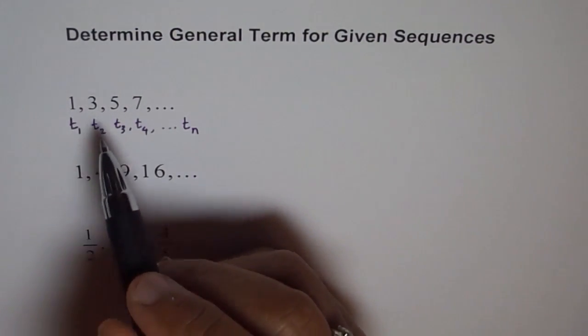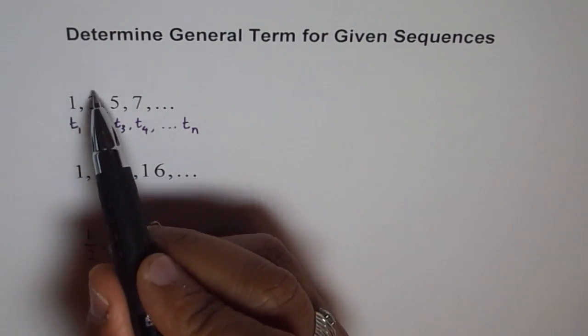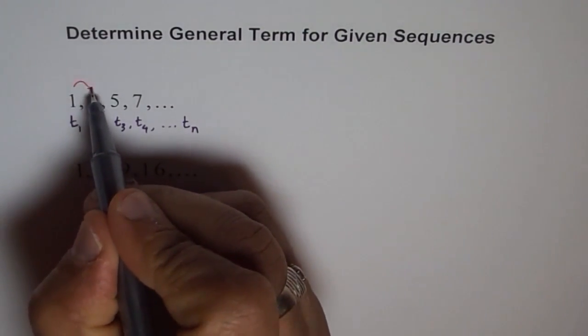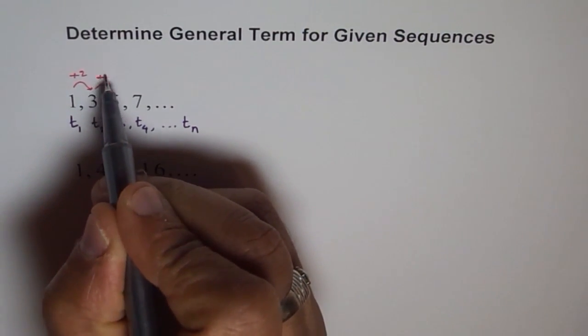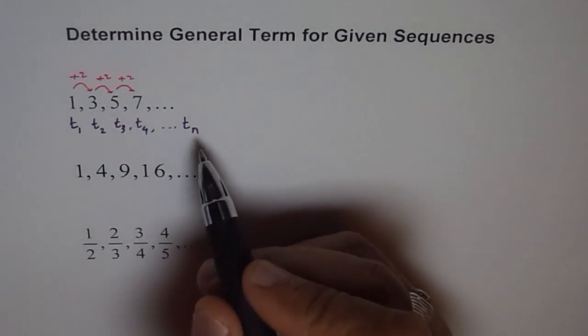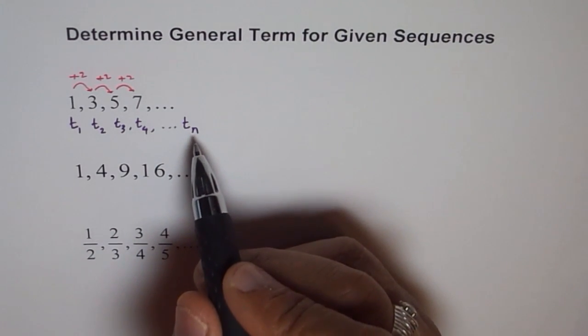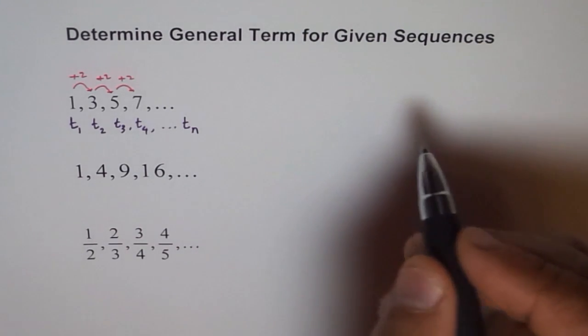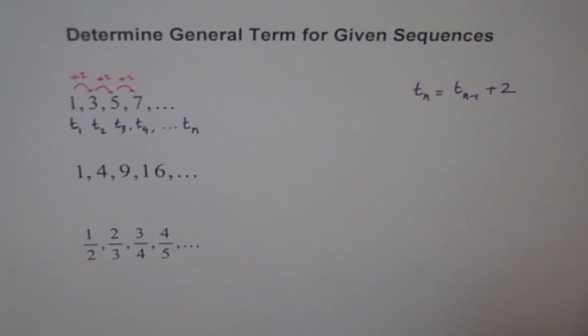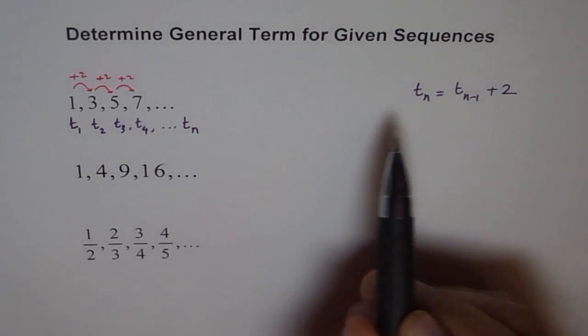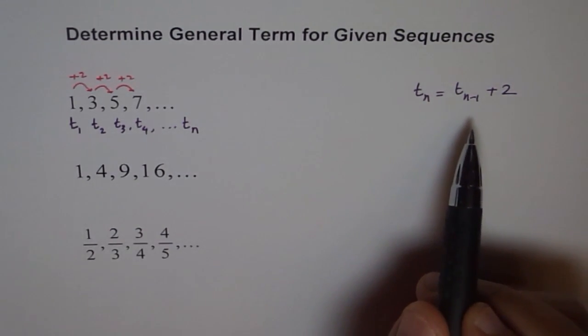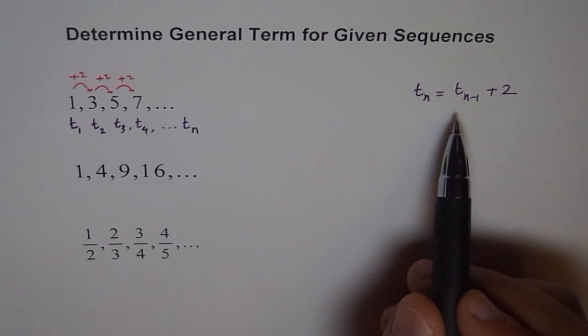From here we see the pattern is actually increasing by 2. If we go from first term to the second term, then we say plus 2. If we do plus 2 each time, then we get our next term. One way of writing this Tn could be a recursive formula, where we can write Tn as equal to Tn minus 1 plus 2, where we are saying that add 2 to the previous term. This particular way of writing a general term is called recursive formula, where we are involving the previous terms.